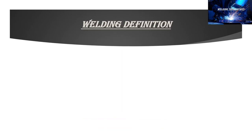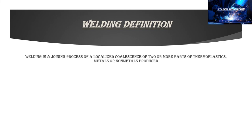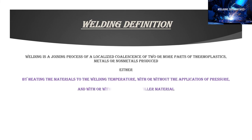Finally, let us combine all five basic components and see the final definition of welding. Welding is a joining process involving localized coalescence of two or more parts of thermoplastics, metals, or non-metals, produced either by heating the materials to the welding temperature with or without the application of pressure.